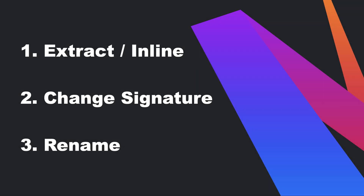The three ways to simplify your code are to extract and inline it, change the signature of a method, or rename something.